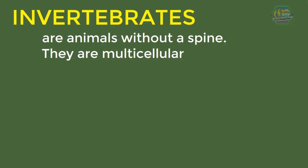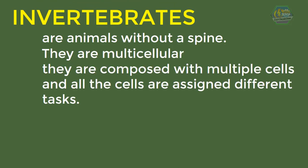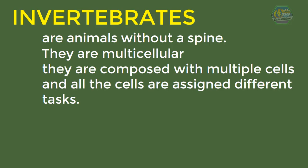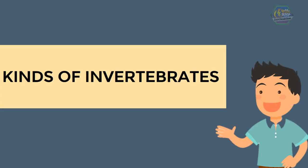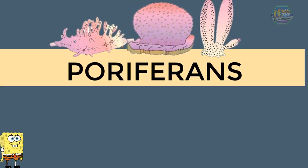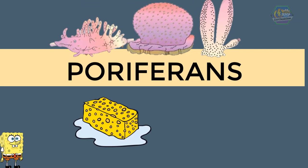Now how about invertebrates? Invertebrates are animals without a spine. They are multi-cellular, meaning they are composed of multiple cells, and all those cells are assigned to different tasks. Almost all invertebrates live underwater or in the ocean. One kind of invertebrate is the sponge, or Porifera — they look just like a sponge.